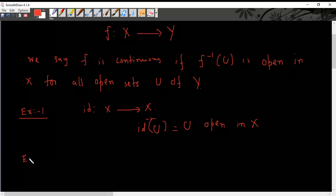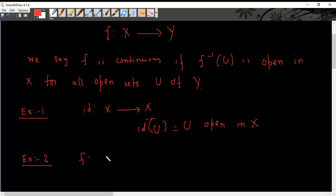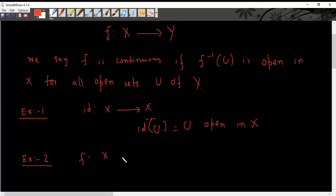Now let's look at example number two. Suppose f is just a set map from X to Y where both are topological spaces, but the condition is that X has discrete topology.